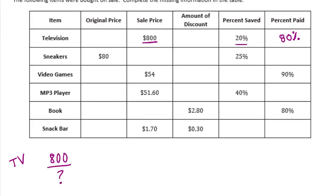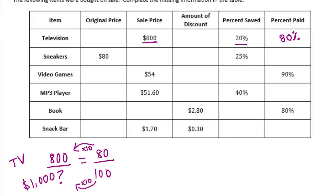We know the percent paid was 80%, which is 80 out of 100. To get from 80 to 100, we multiply by 10/8, so 100 times 10 gives us $1,000. The original price of the TV was $1,000, and the discount is $1,000 minus $800, which is $200.